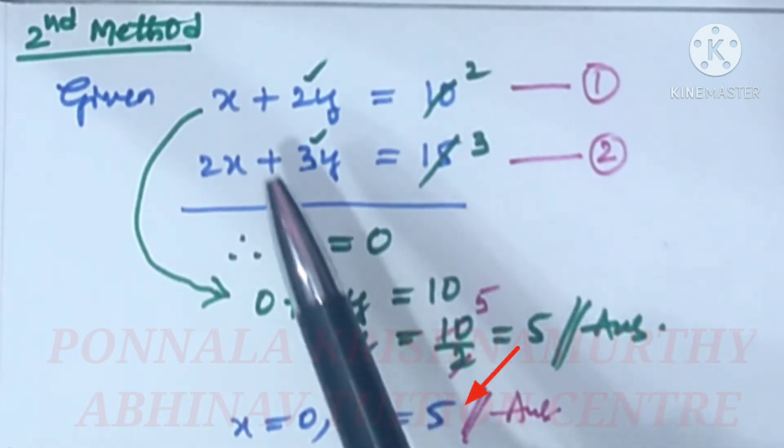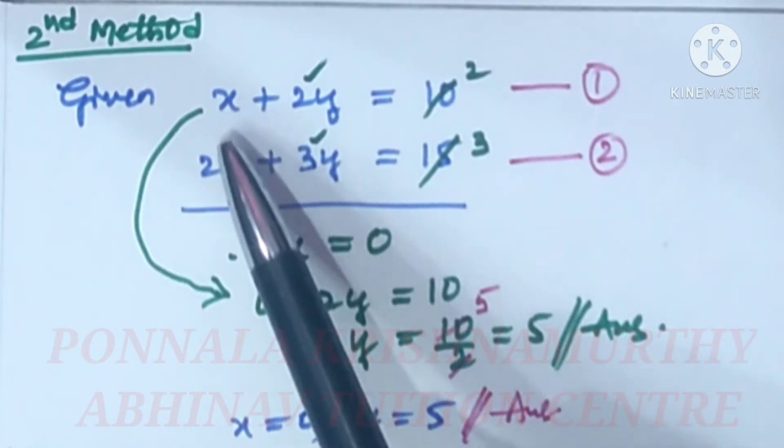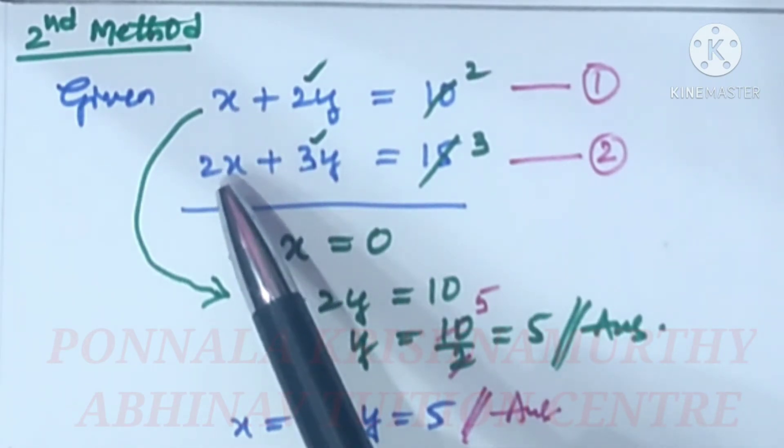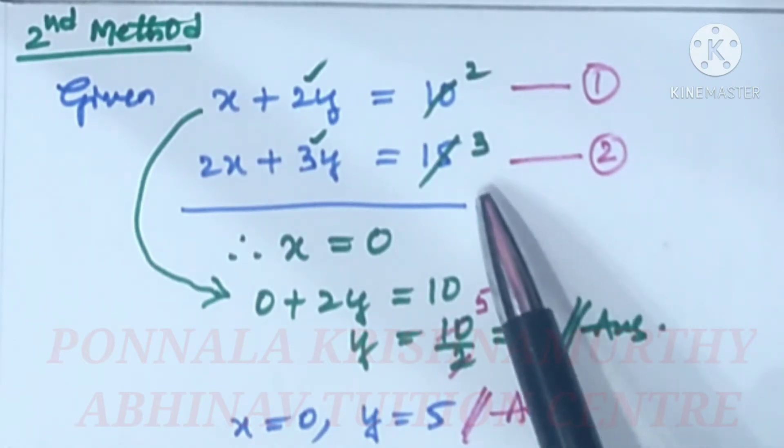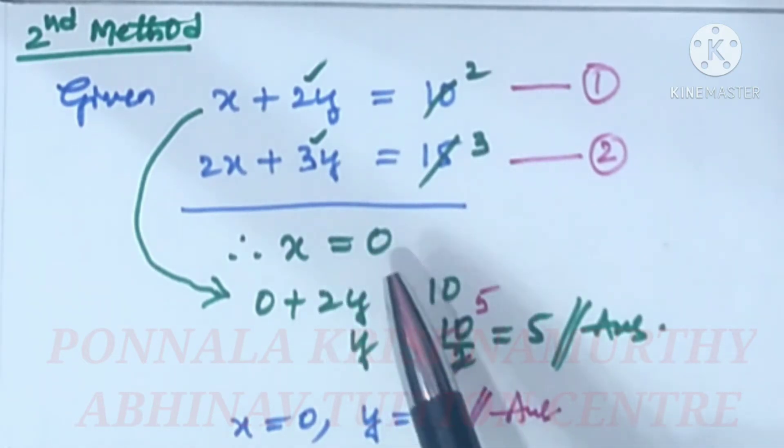If the coefficients of x terms ratio is equal to the constant ratio, then y is equal to 0. Then we have to find out x value.